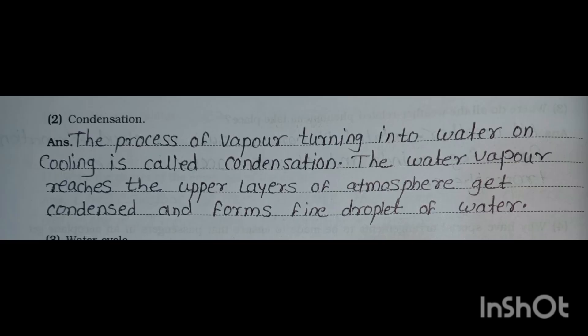Condensation: the process of vapor turning into water on cooling is called condensation. The water vapor reaches the upper layers of the atmosphere, gets condensed, and forms fine droplets of water.